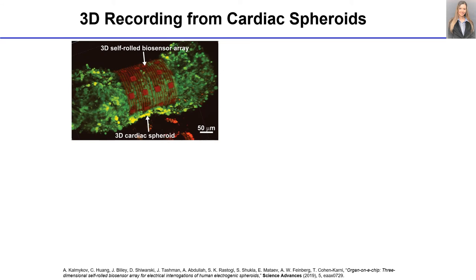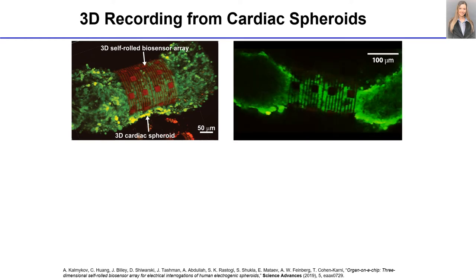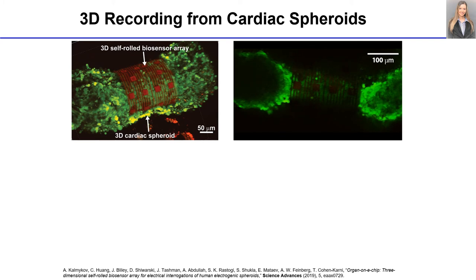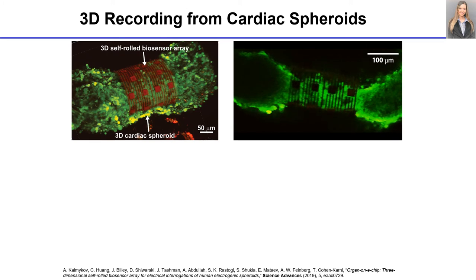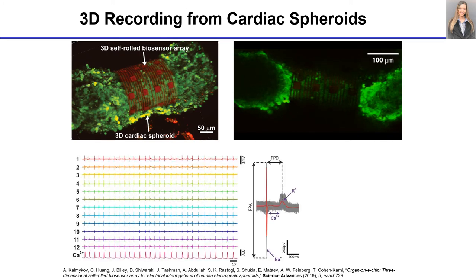As a proof of concept, we used three-dimensional assembled microelectrode arrays to record from human cardiac spheroids — embryonic stem cell-derived cardiomyocyte spheroids. We mount a single spheroid into our 3D biosensor array and recorded 12 sensors concurrently. A calcium movie shows the electrical activity using optical imaging.